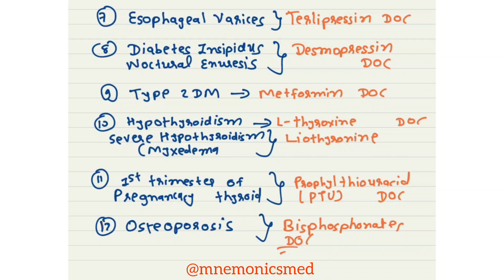Drug of choice for type 2 diabetes mellitus is Metformin. For hypothyroidism, severe hypothyroidism, or myxedema, drug of choice is L-thyroxine or Liothyronine.